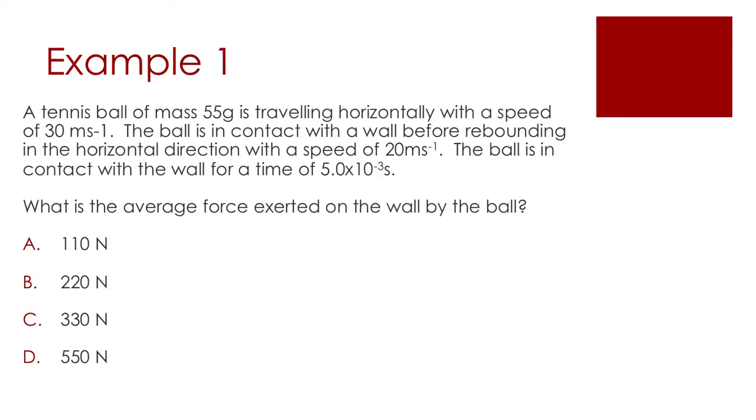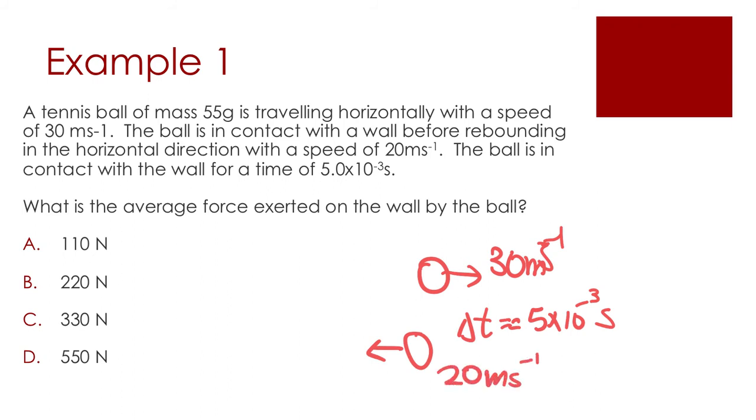Okay, so let's see how we can use Newton's second law using momentum in a couple questions. First of all, I have a tennis ball and it's traveling horizontally with a speed of 30 meters per second and is in contact with the wall for a time of 5 times 10 to the minus 3 seconds, so 5 milliseconds. But afterwards, it actually is moving the opposite direction and now it's traveling at 20 meters per second.